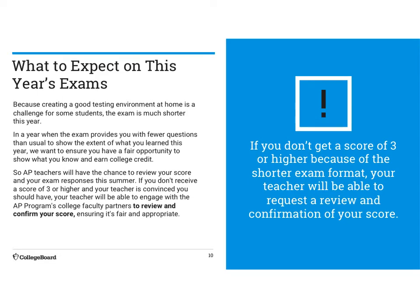The exam is going to be shorter. We've talked about this a lot, but you have a much shorter exam. There are just two questions for both Physics C and Physics 1 this year. That means the test is going to be 40 minutes long, as opposed to an hour and a half for Physics C and a three-hour test for Physics 1. It's a much shorter test.